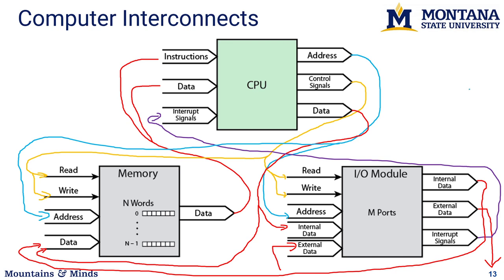Obviously this is a simplified and messy picture, but you get the general idea of how data passes between memory, CPU, and I/O to direct operations of each unit. We need to dive a little bit deeper so this isn't still magical — we want to get it down to the granularity of individual bits.